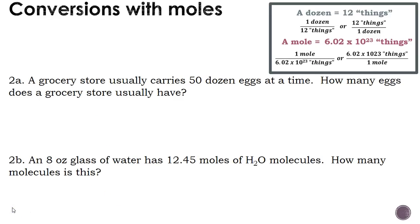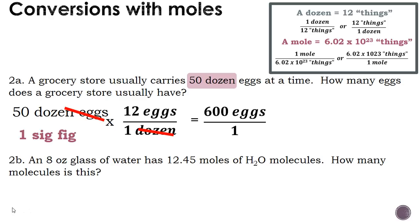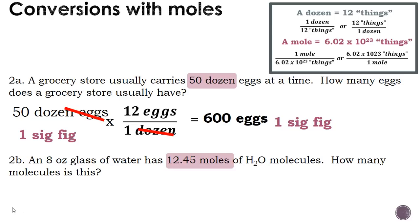Let's take a look at another problem. Problem 2a says a grocery store usually carries 50 dozen eggs at a time — how many eggs does the grocery store usually have? We start with 50 dozen. We know in one dozen there are 12 eggs. We cancel out dozen and get a final answer of 600 eggs.